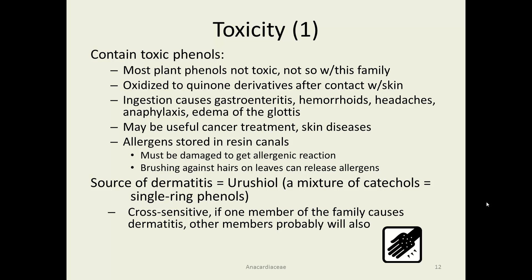Obviously this family has toxicity in spades, despite having several commonly eaten fruits. The toxic agents are a mixture of a particular type of phenol called catechols — urushiol is actually several different compounds in one. It oxidizes and causes gastroenteritis for people unfortunate enough to consume it, as well as hemorrhoids, headaches, anaphylaxis, and edema of the glottis — essentially your voice box. Some compounds have been tried in cancer treatments and skin diseases. These allergens occur in resin canals in these plants.